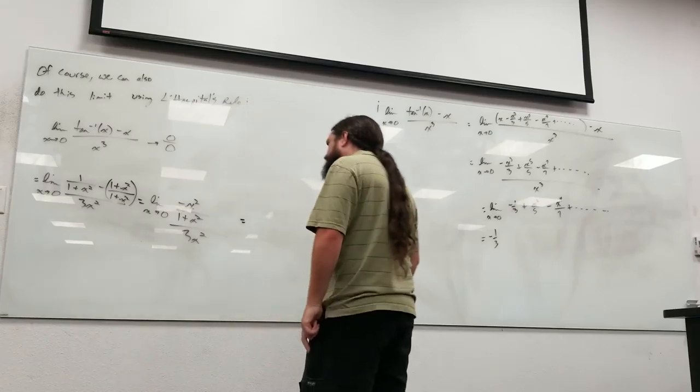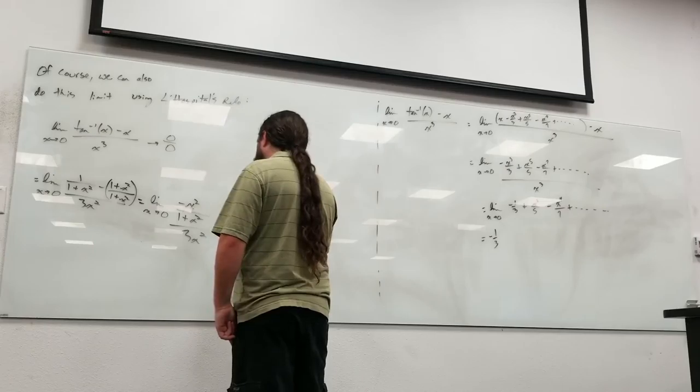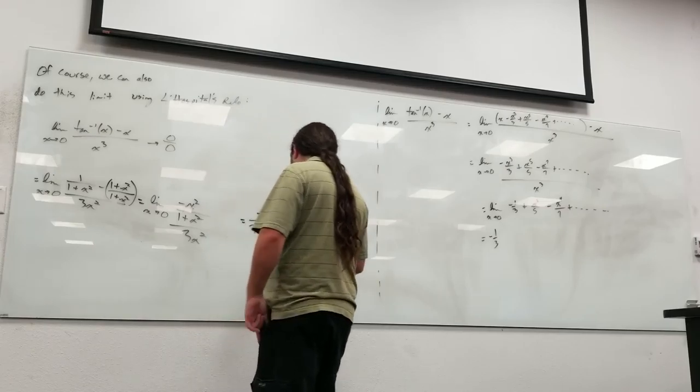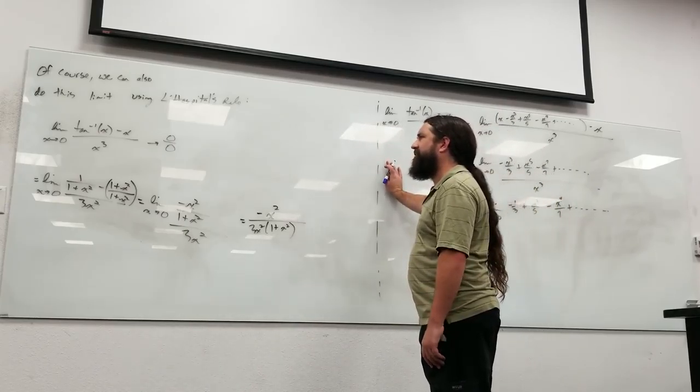Alright, so this is negative x squared over 3x squared times 1 plus x squared. It sure looks like it's going to go to zero or blow up. Let's see. Did we do something wrong?